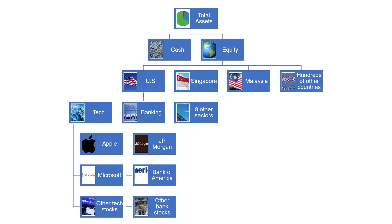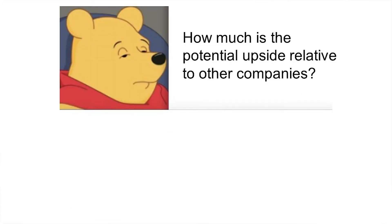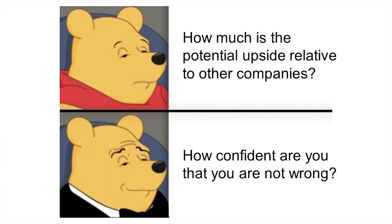How much concentration depends on: number one, how much is the upside of this particular company versus the rest; and number two, how confident are you that you are not wrong. In summary, I think this top-down allocation is a very flexible framework. Your portfolio could be as simple as one ETF covering the entire world, or it could be a mixture of ETFs and individual companies. And if you are very confident in your stock picking skill and just want to concentrate all your capital in one single company, you can also do so — but bear in mind that if you are wrong, your entire portfolio will have a very bad result. That's all about the top-down allocation.